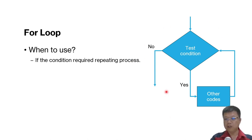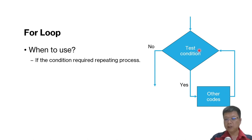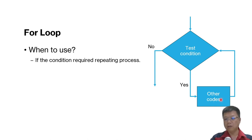This is the flowchart showing how it works. It will go from the above code to the test conditions. If it fulfills the test condition, it will go to another part of the code, then return to the test condition to check again. If no, it will exit. If yes, it will keep looping inside the code, and then complete the other parts.